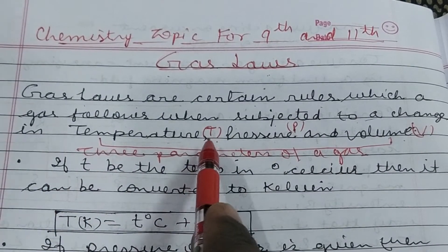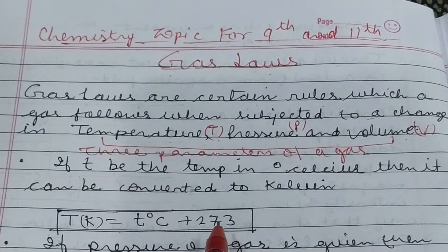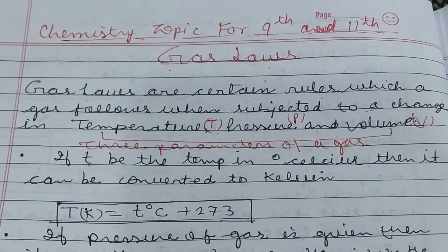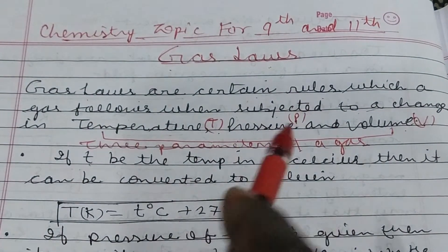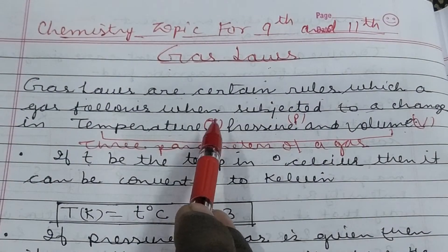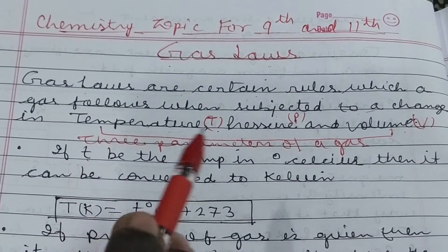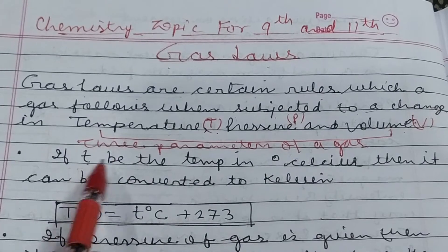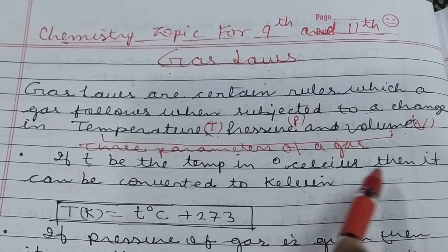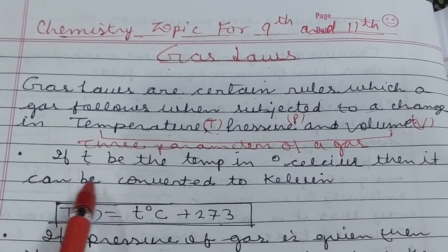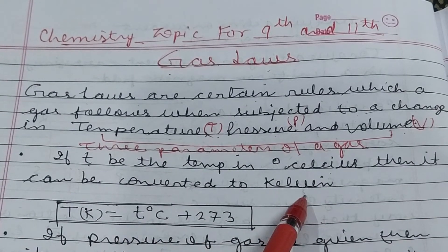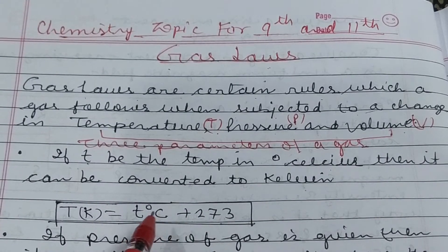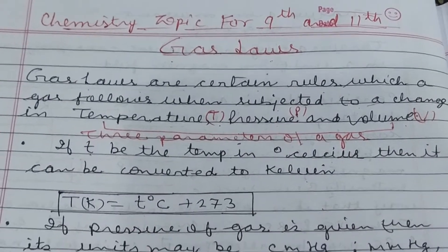First, we will discuss the units in numerical problems. Small t represents temperature in Celsius, while capital T represents Kelvin temperature. When solving numerical problems, you must use Kelvin or SI units. If T is the temperature in degree Celsius, convert it to Kelvin by adding 273.